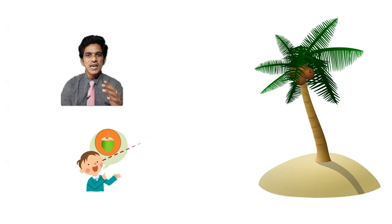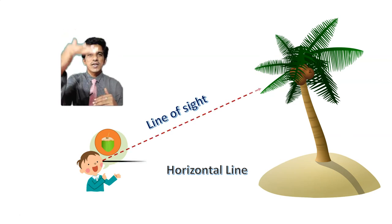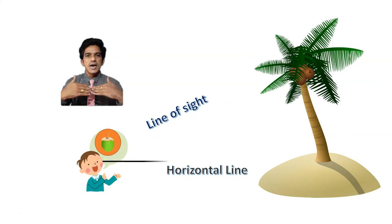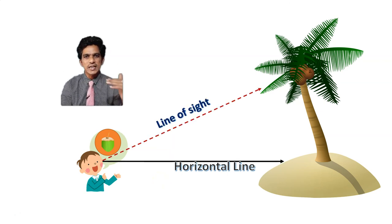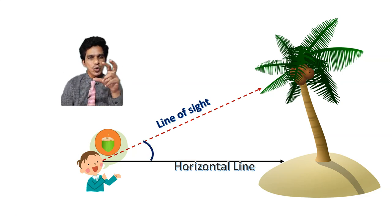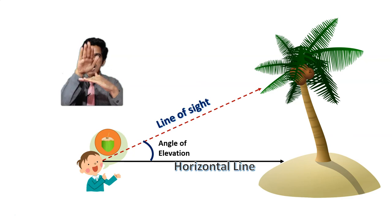When the line of sight is in an upward direction, you have to imagine one more line — the horizontal line. The horizontal line is a direction which is straight and parallel to the earth. Now we have two lines: line of sight and horizontal line. The angle between these two lines — when the line of sight is above the horizontal — is called the angle of elevation.